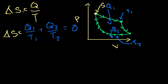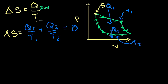It turns out it was only valid because the Carnot cycle was reversible. This is a subtle but super important point, and I really should have clarified this in the first video. I was too caught up showing the proof of the Carnot cycle to emphasize the reversibility requirement.